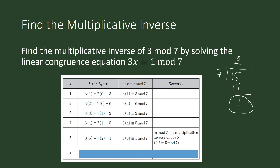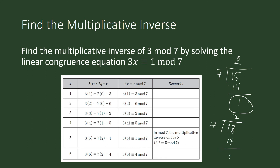How about 6? Maybe there are two multiplicative inverses for 3 modulo 7. Well, 3 times 6 is 18, and 18 divided by 7 equals 2 with a remainder of 4. So 6 is not a multiplicative inverse of 3 modulo 7. The only multiplicative inverse of 3 modulo 7 in the set is 5.